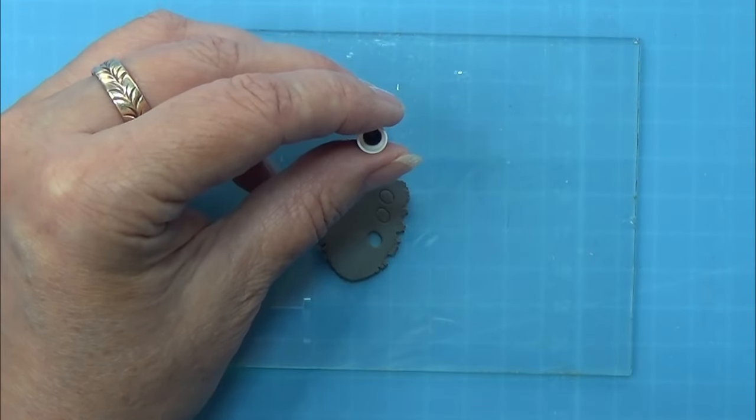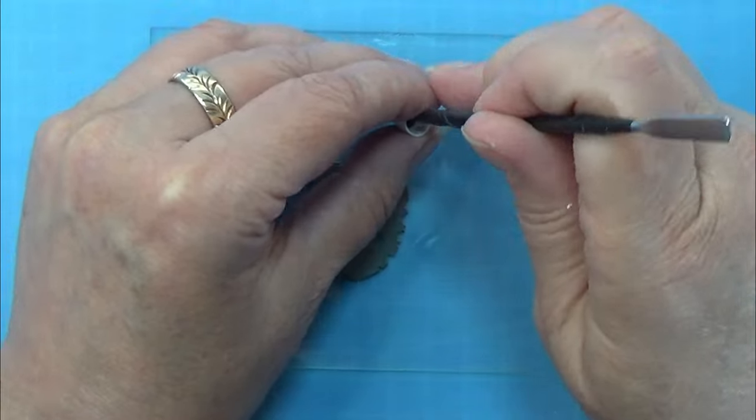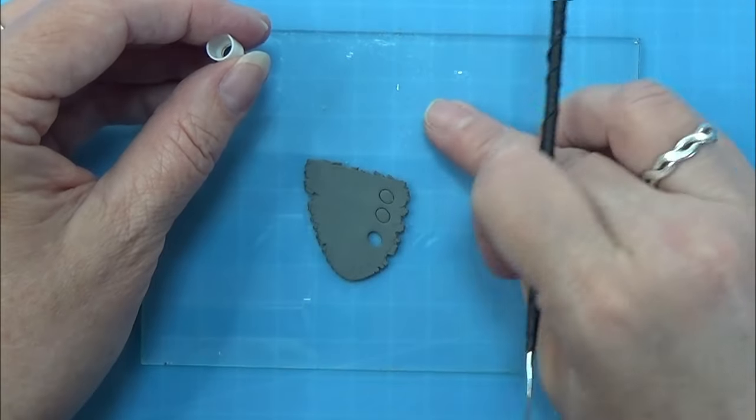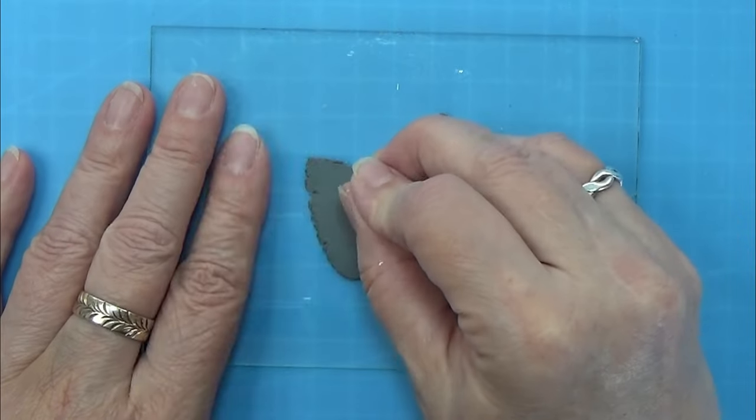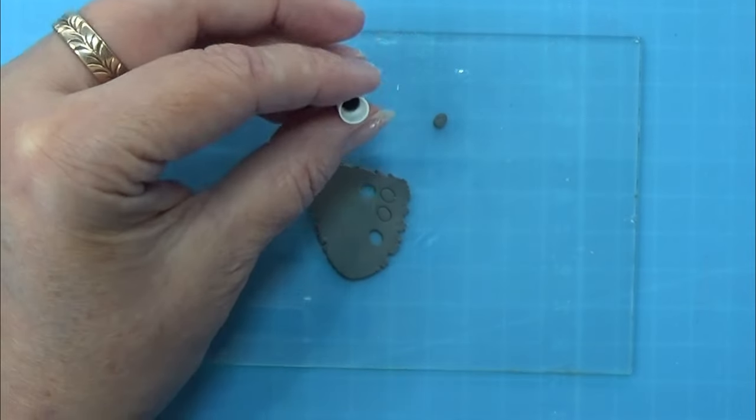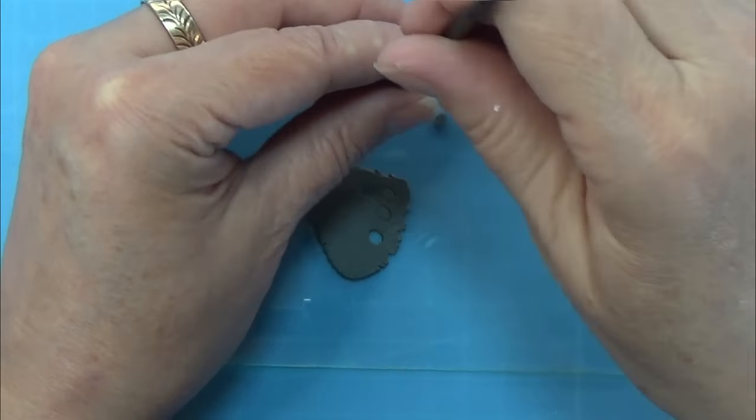Then I have this clay that I rolled out, I think it was on a setting 4 on my pasta machine, and I'm just punching out a few of these oblong pieces here for the bottom part of the puncher.